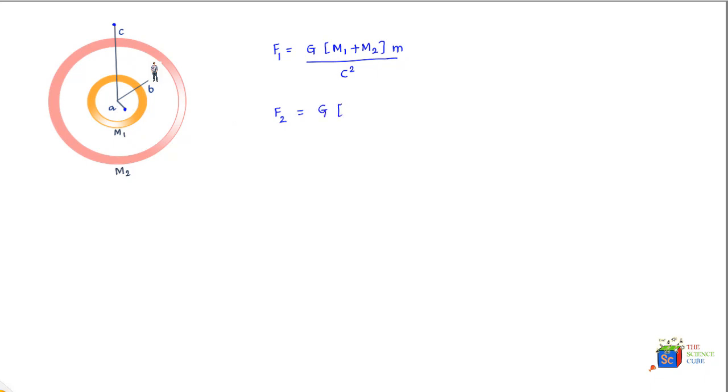you because you are inside the shell. As per the shell theorem, you should not experience any force on account of the outer shell, so the relevant mass to consider is M1. Your mass continues to remain the same at m, and this time around the radius becomes b, and you take square of that. Now when